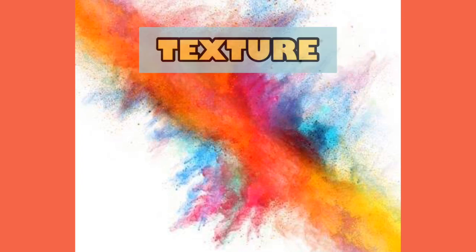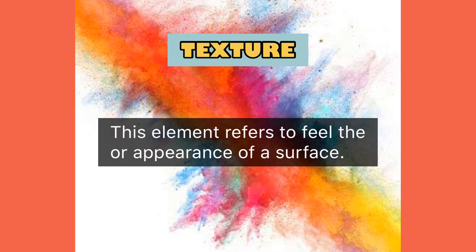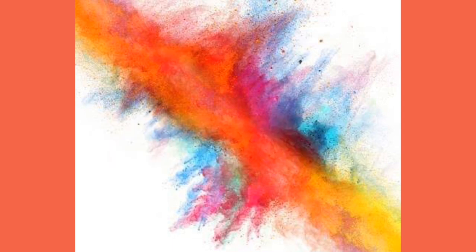Next, we have texture. This element refers to the feel or appearance of a surface. Texture is a surface quality in a work of art, and we associate textures with the way that things look or feel. Everything has some type of texture — it can be rough, smooth, silky, shiny, or otherwise.